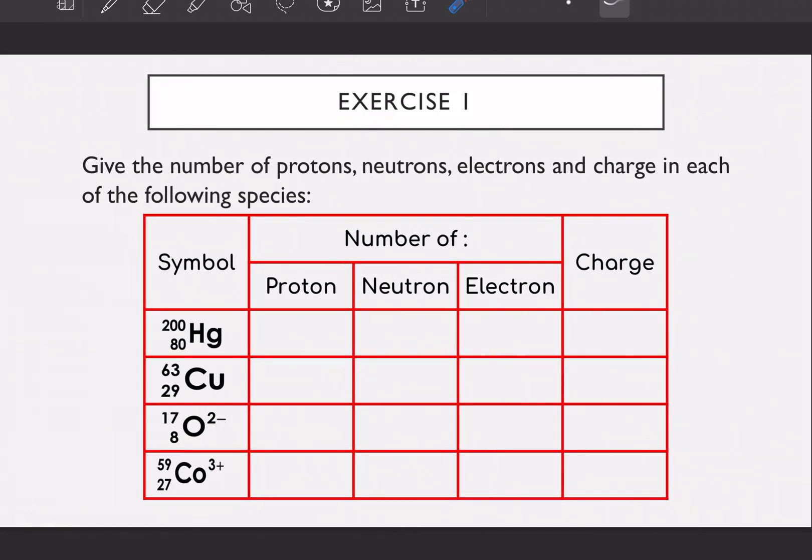Maksudnya dia punya boiling point, melting point, yang lain tu benda macam tu physical properties berbeza. So bawah ni awak ada uranium punya isotopes. This is an exercise for you to do. So give the number of protons, neutrons, electrons and charge in each of the following species. So I want you to try to do this exercise on your own. Nanti boleh check jawapan dengan saya.